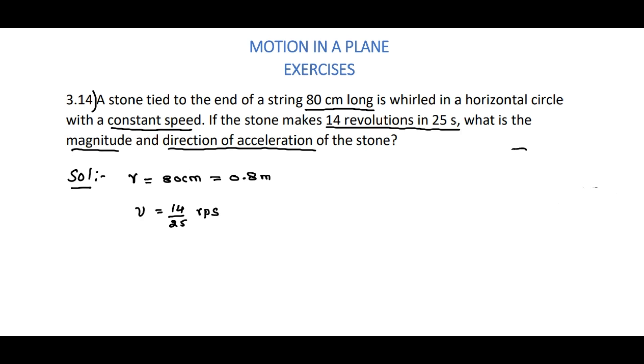Here, the situation is like this. The stone is revolving in a circular path of radius r equals 80 cm, and this motion is uniform circular motion.